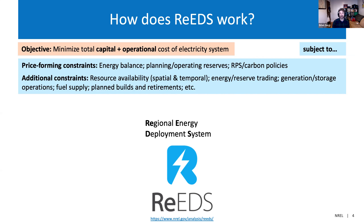There are a bunch of other constraints. Key ones include resource availability — making sure you have available wind and solar both from a spatial aspect, looking at locations where wind and solar is available, and a temporal aspect, understanding when the wind and solar is available and how that factors into operating your power system. Things like energy and reserve trading — looking at transmission limits between regions and making sure those limits are respected when planning on trading between regions. Generation and storage operations — respecting physical operating constraints of generators and for storage, tracking that you have available state of charge if you plan to dispatch. And other aspects related to available fuel supply, planned builds and retirements.